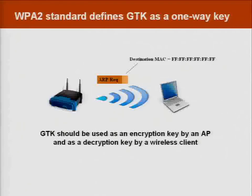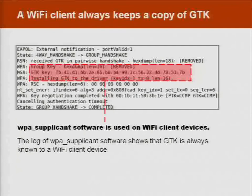By design, GTK is used as a one-way key. The access point uses it for broadcast traffic encryption, and all client devices use it as a decryption key. That is how the software in access points and clients is programmed. The client keeps a copy of GTK because it has to decrypt packets coming from the access point.